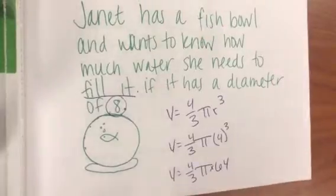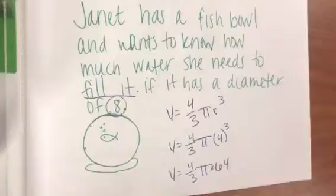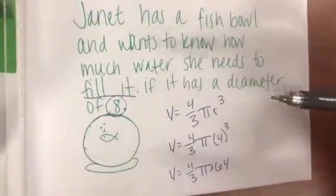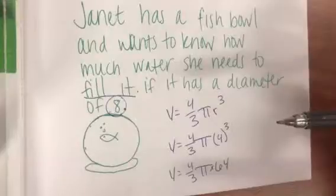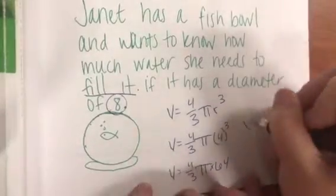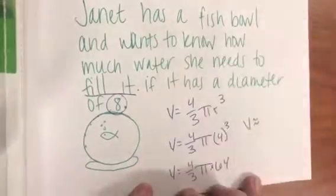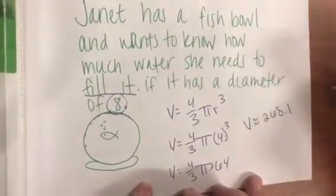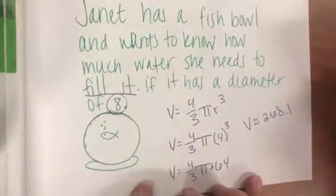What is 4 thirds pi times 64? Oh dadgummit, she's my calculator person and she's not doing her job. What is it? 4 thirds times pi times 64. Volume is approximately 268.1.